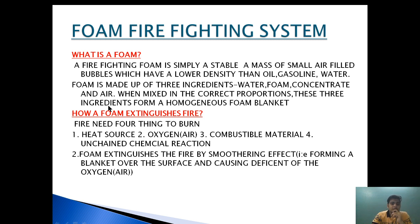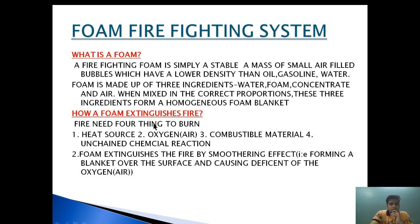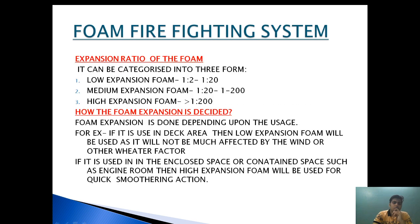When mixed in correct proportion, these three ingredients form a homogeneous foam blanket. The second question is: how does foam extinguish a fire? To extinguish a fire, we need to address four things: heat source, oxygen, combustion material, and an unchained chemical reaction. If we can remove any one of these components, the fire will be extinguished. With foam, we remove oxygen by forming a blanket over the surface, making it oxygen-deficient. So foam extinguishes fire by smothering — forming a blanket over the surface and causing a deficiency of oxygen.